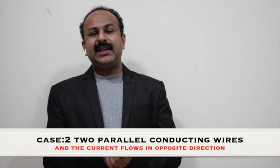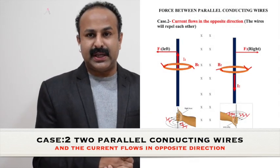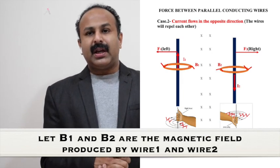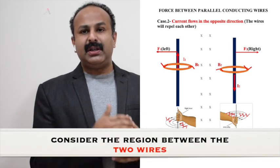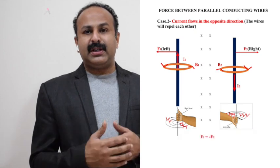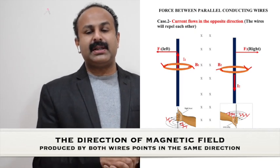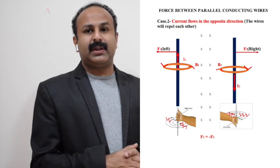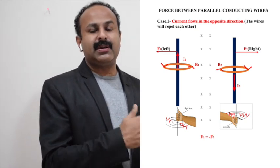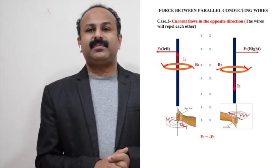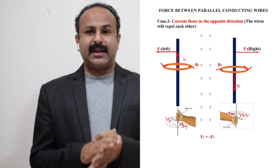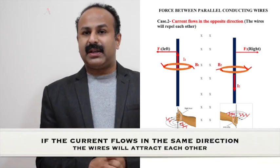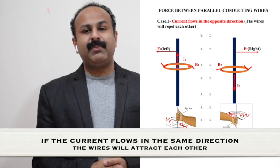In case 2, we have two parallel conducting wires where the current flows in opposite directions. Let B1 and B2 be the strength of the magnetic field produced by each wire. Looking at the direction of the magnetic field produced by each wire between the wires, both magnetic fields point in the same direction — into the plane of the paper. This means these two wires will repel each other. So if two parallel conducting wires carry current in the opposite direction, they will repel each other; and if the current flows in the same direction, the wires will attract each other.